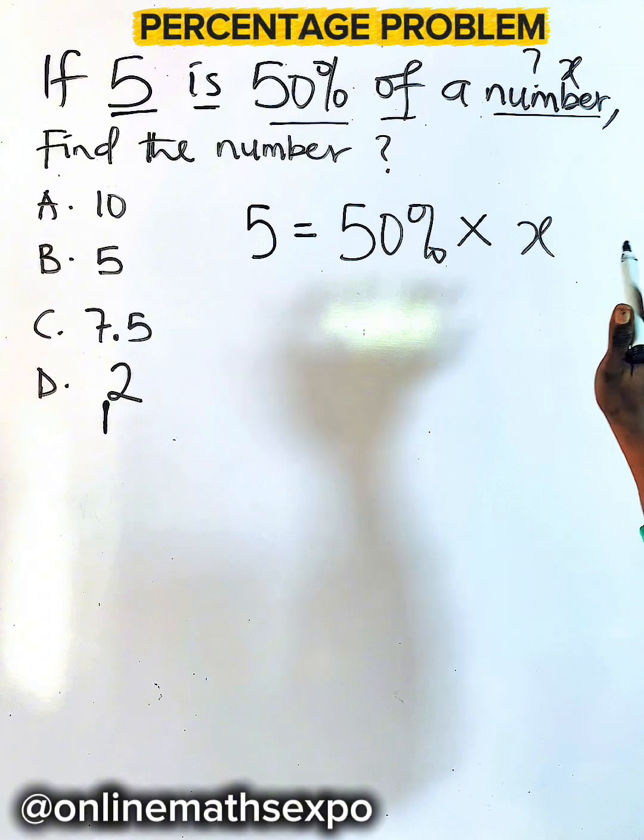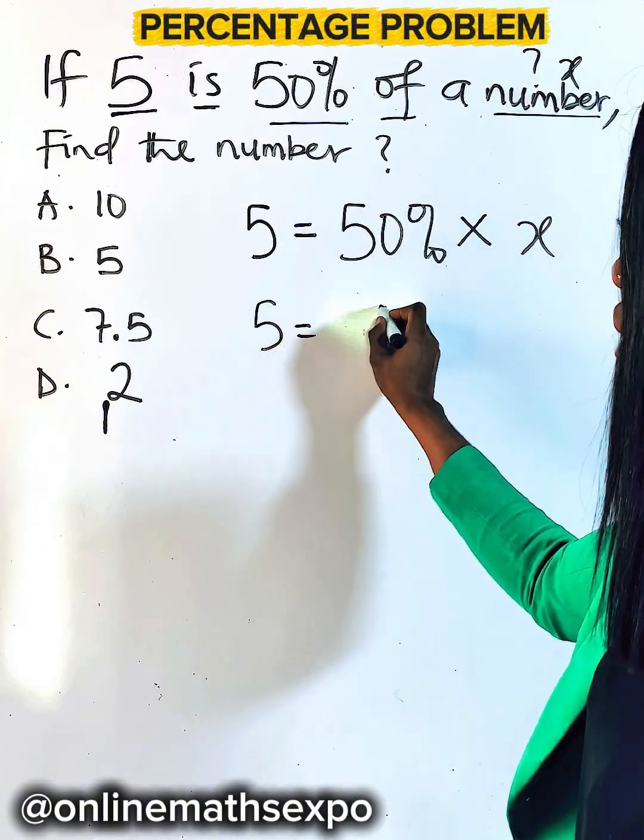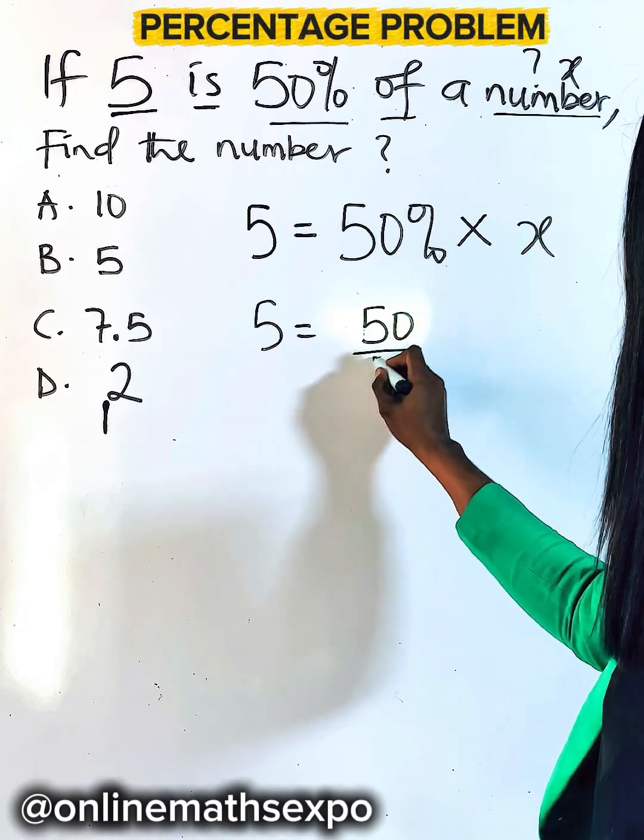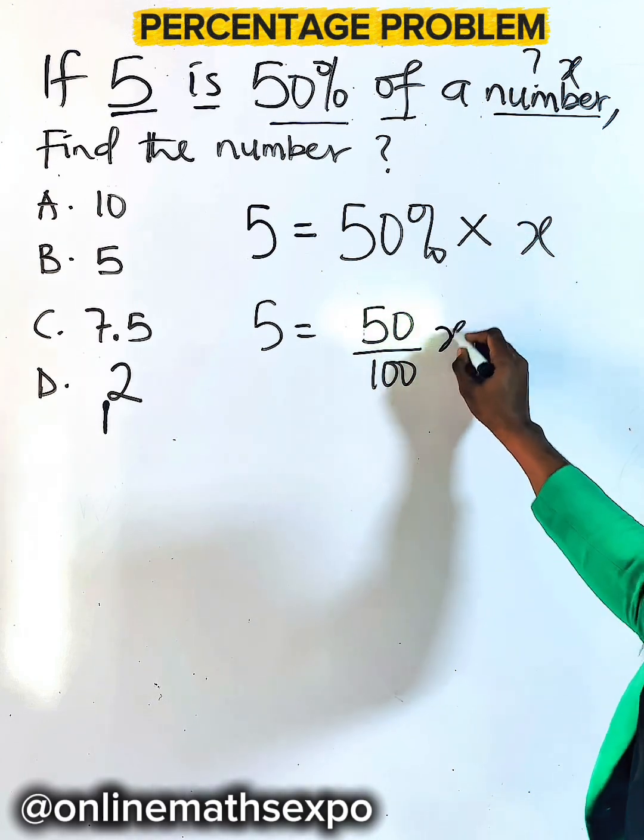So simplify this. Remember, when you have 50%, it is the same as 50 divided by 100. Percentage is a fraction of 100. Then multiply by x.